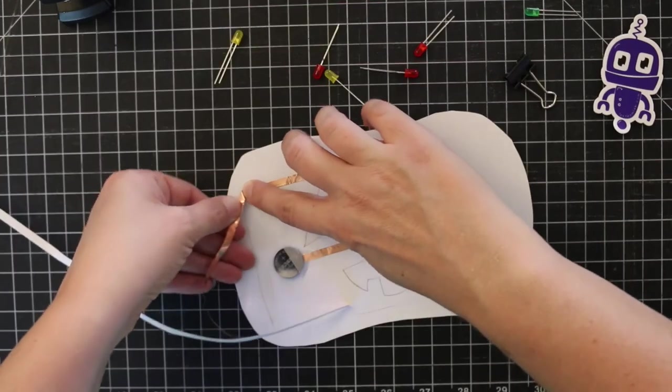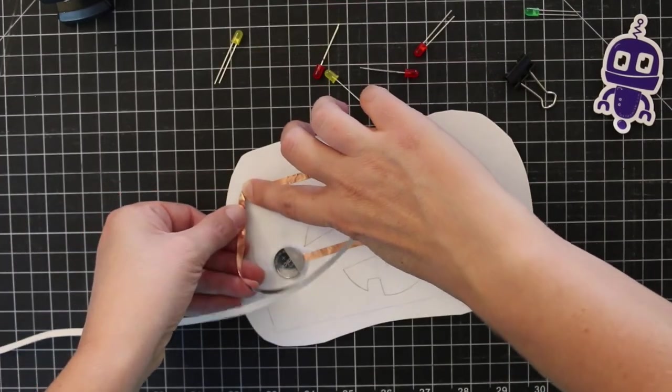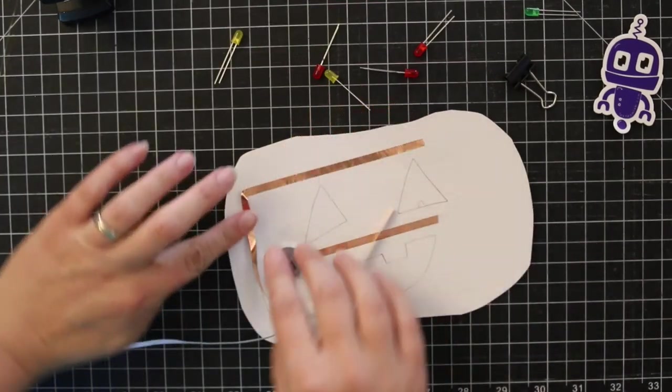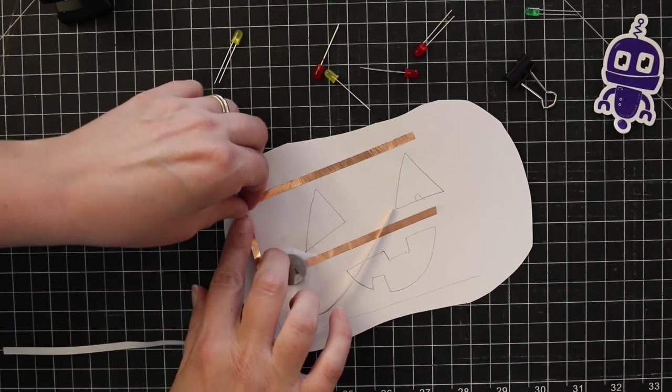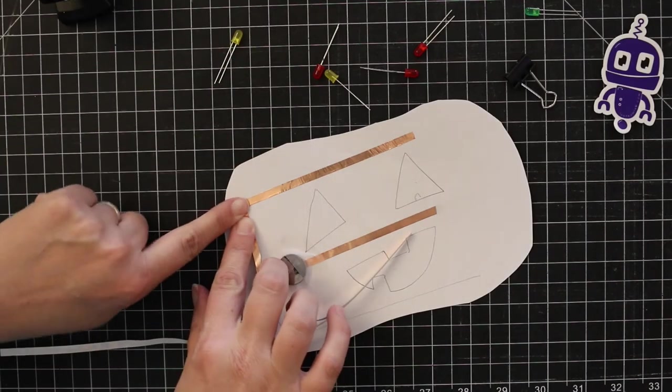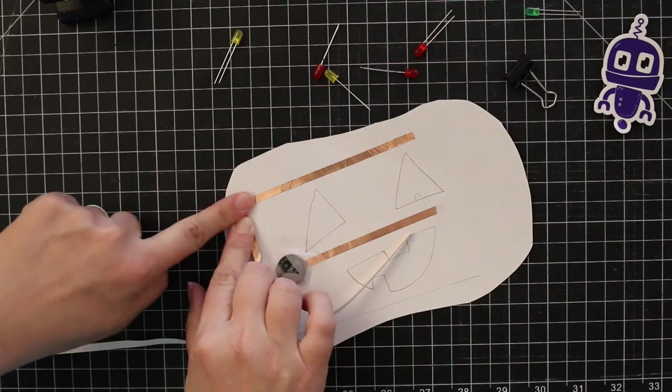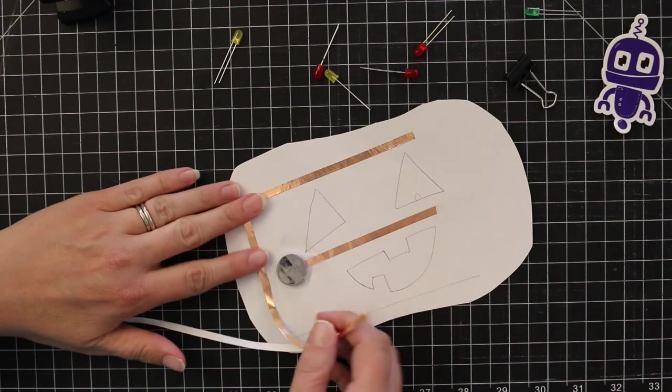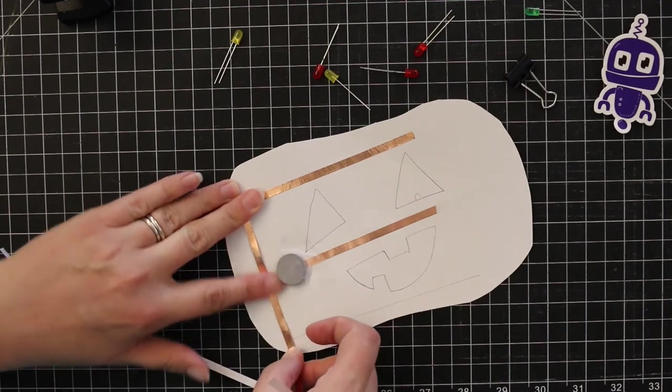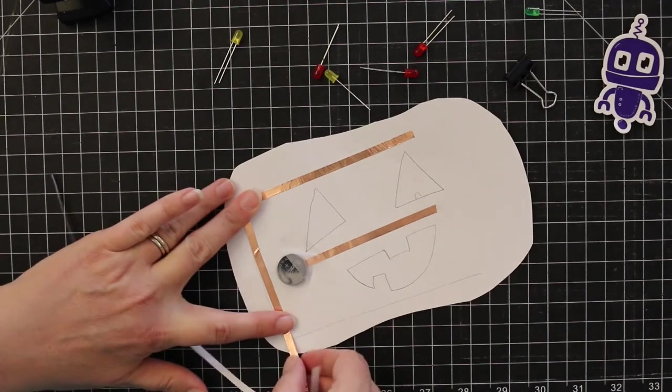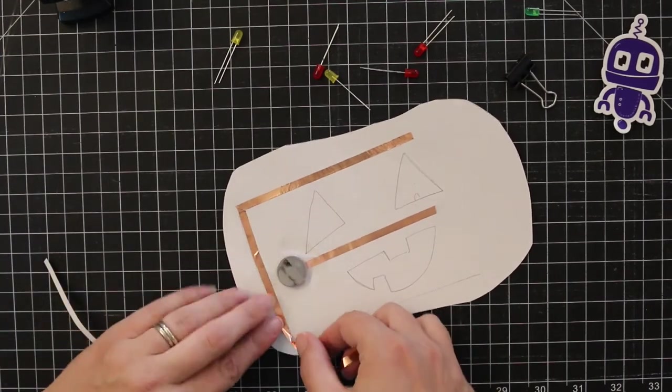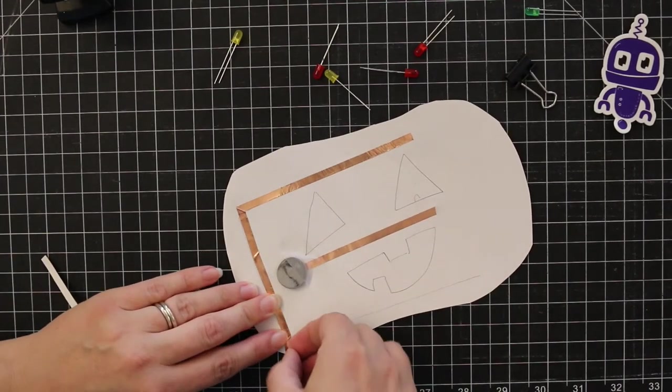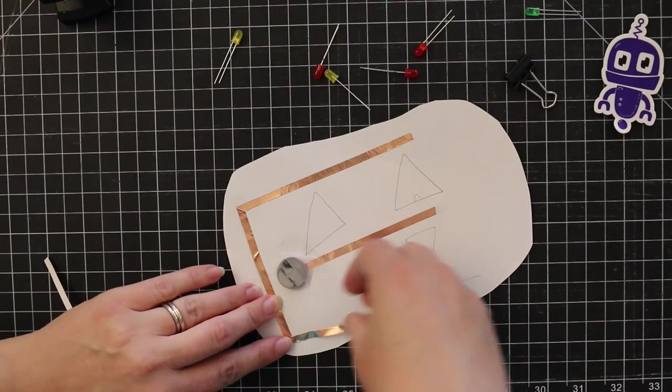We're going to make as neat a fold as we can up in this top corner. Again, since our tape doesn't have conductive adhesive, we don't want to actually cut it here. We just want to make a neat little pleat fold. Your folds may not be as neat as that. It's okay. That's not going to make or break your project. See, this fold isn't going to be so neat. There we go.